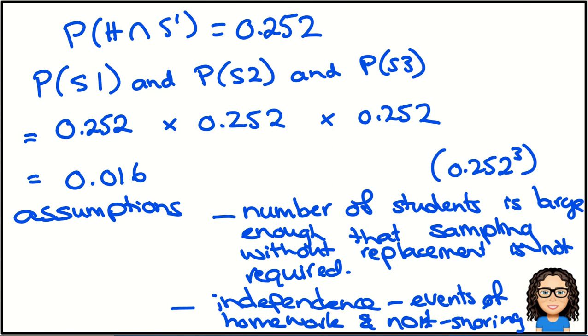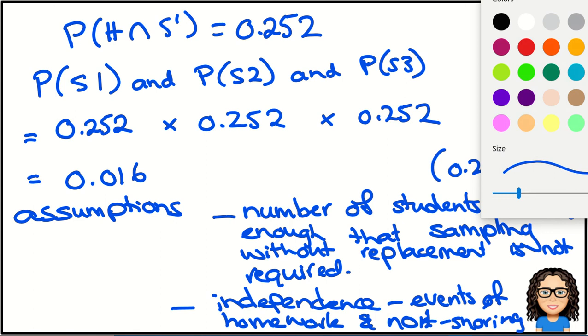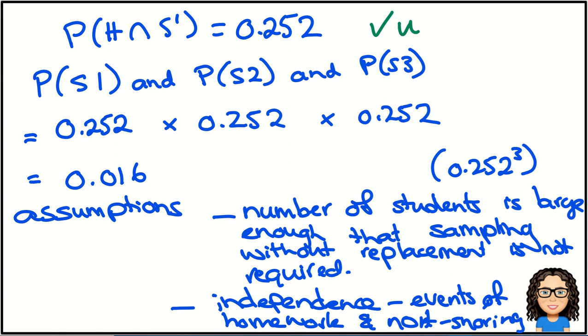So if you're able to calculate the probability here of 0.252, then that would get you the achieved score. If you're able to get to this probability here of 0.016, then that would give you the merit score. If you're also able to calculate one assumption as well as that, that would get you through to the excellence. Thanks very much for watching.